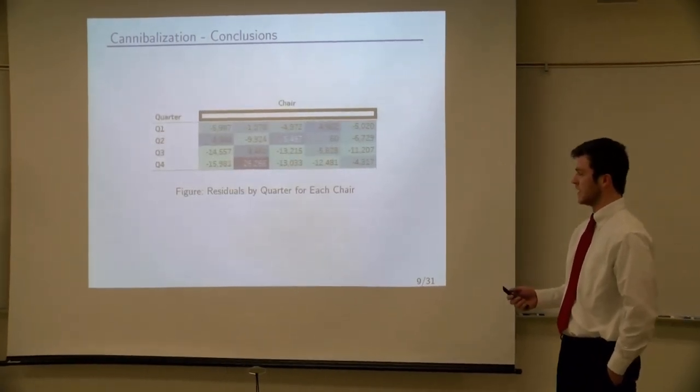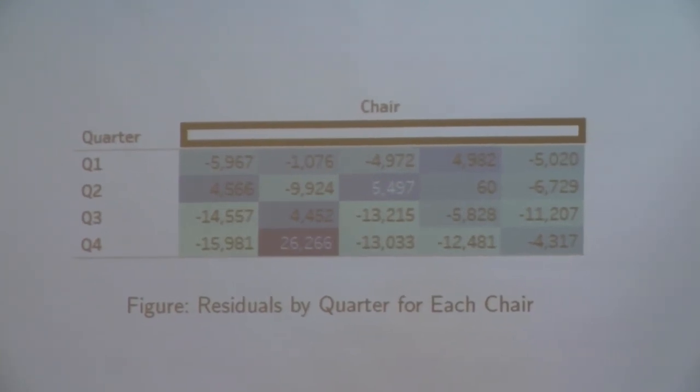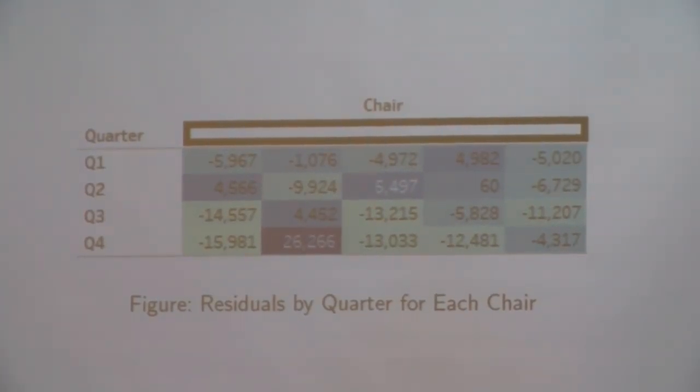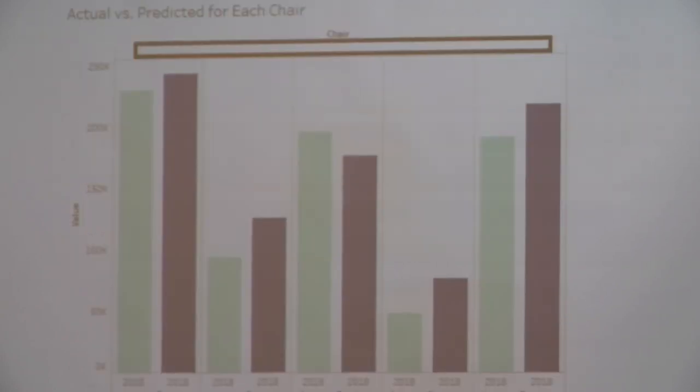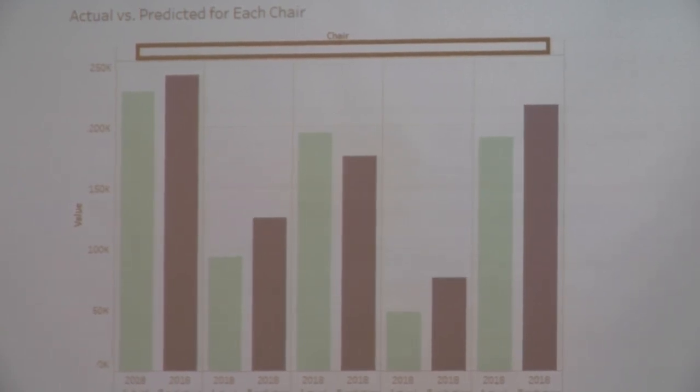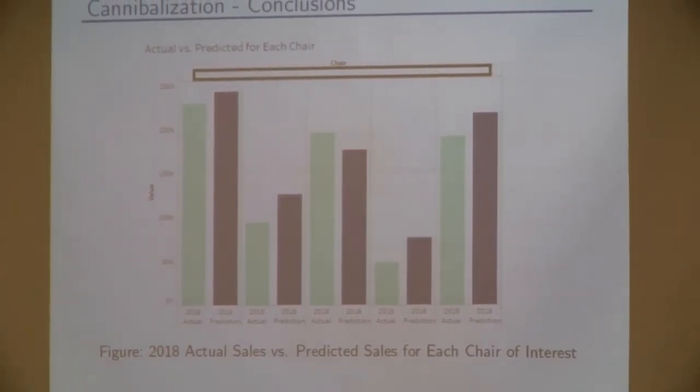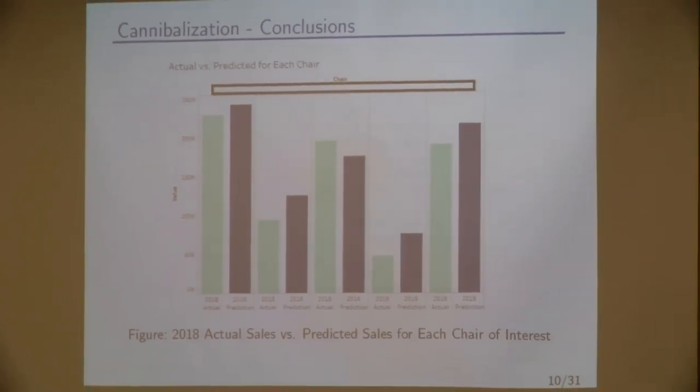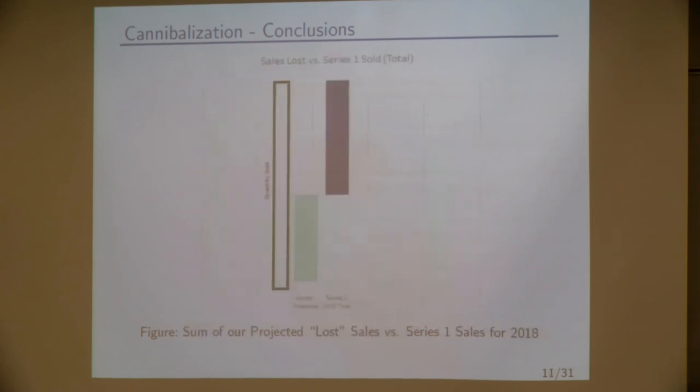So here we have a table of the residuals for each chair by quarter. So that's just taking what the actual sales were for this quarter for this chair and then subtracting what we projected the sales should have been if Series 1 not been introduced. So as you can see, most of these cells are negative, which means that we're predicting higher sales than what actually was sold for each chair. And then these bar graphs kind of just reiterate that. So the bar on the left is what was actually sold for each chair, with the bar on the right being what we predicted for 2018. And as you can see, for four of the five chairs of interest, the prediction was slightly higher than what was actually sold except for this middle chair. So that kind of indicates a potential cannibalism.